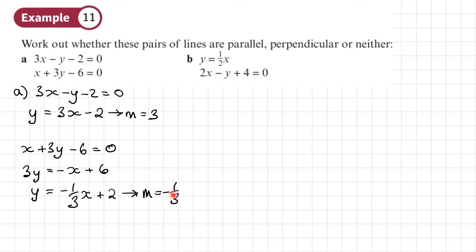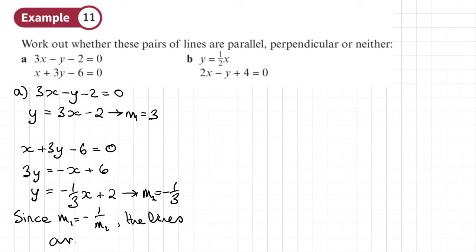If I multiply these two gradients together, I get negative 1. Taking 3 as m, negative 1 third would be negative 1 over m. Calling these m1 and m2, since m1 equals negative 1 over m2, the lines are perpendicular.